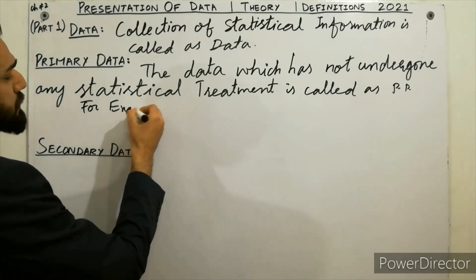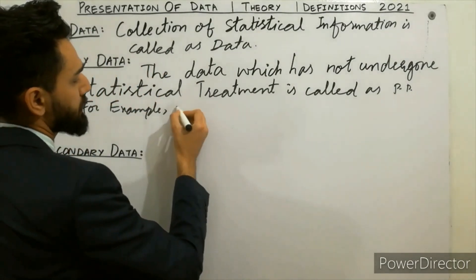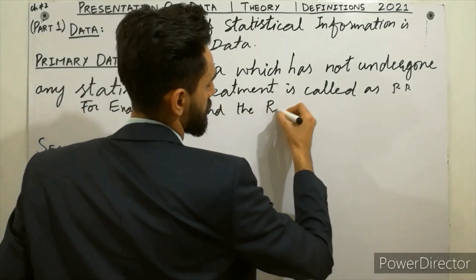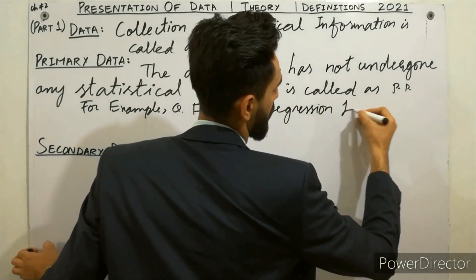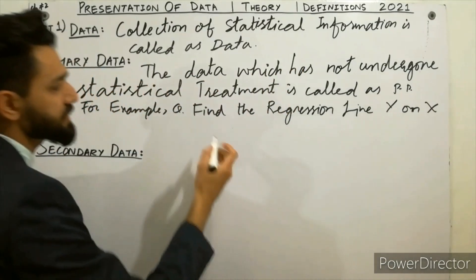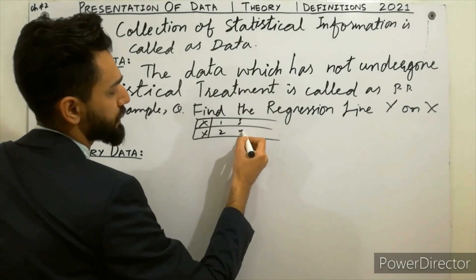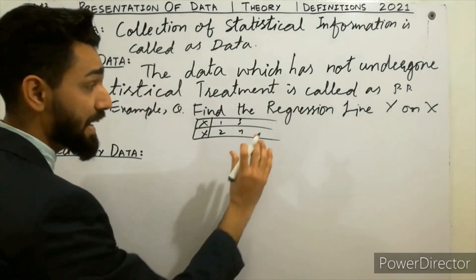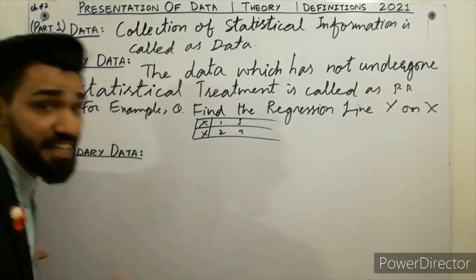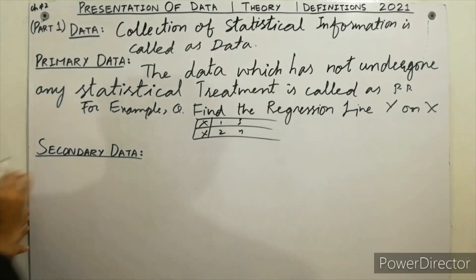For example, if a question is given in the paper — find the regression line of y on x — and the raw data values like x and y (1, 2, 3...) are given directly in the paper, that data is called primary data. It is fresh data which has not undergone any statistical treatment.